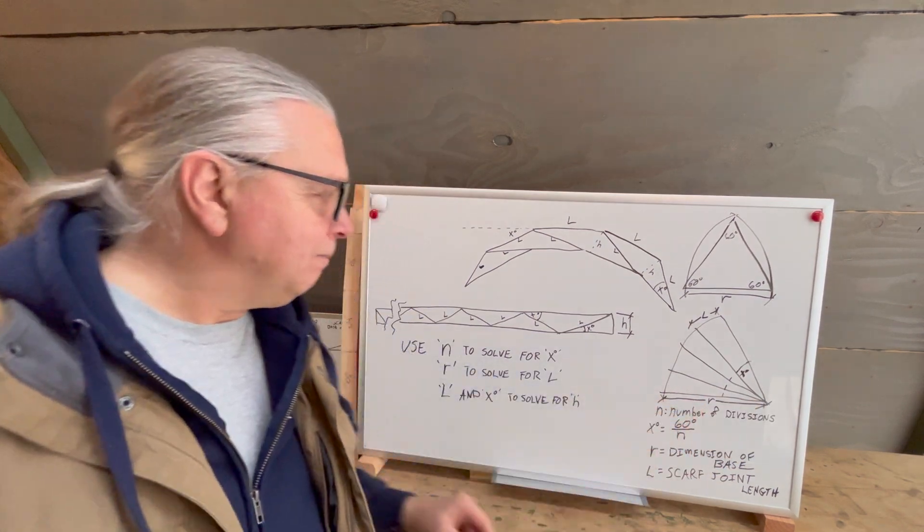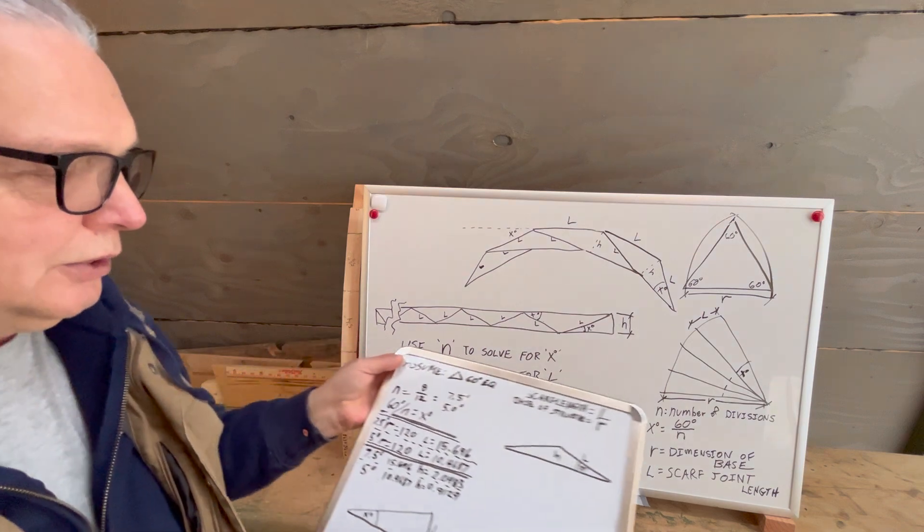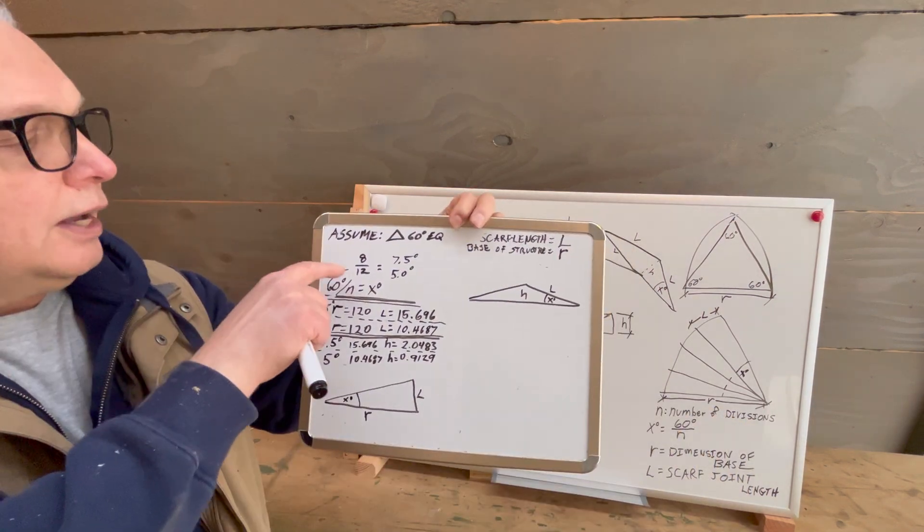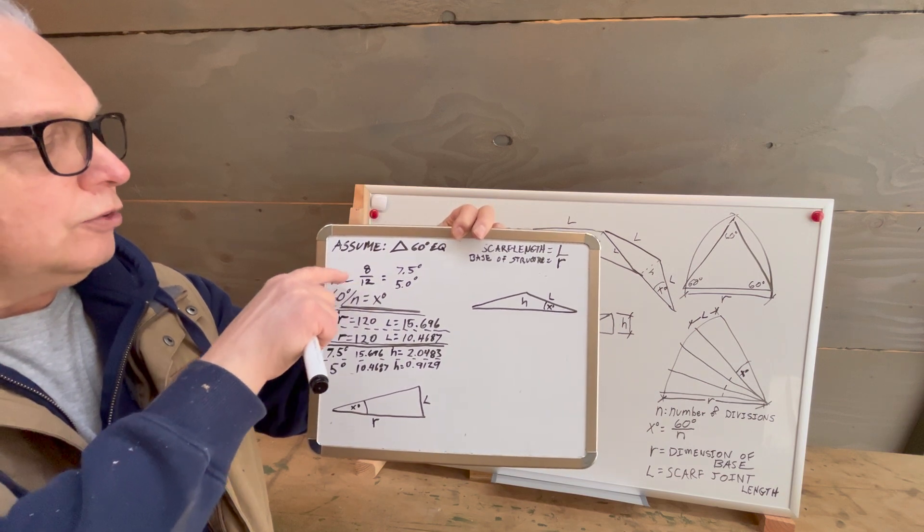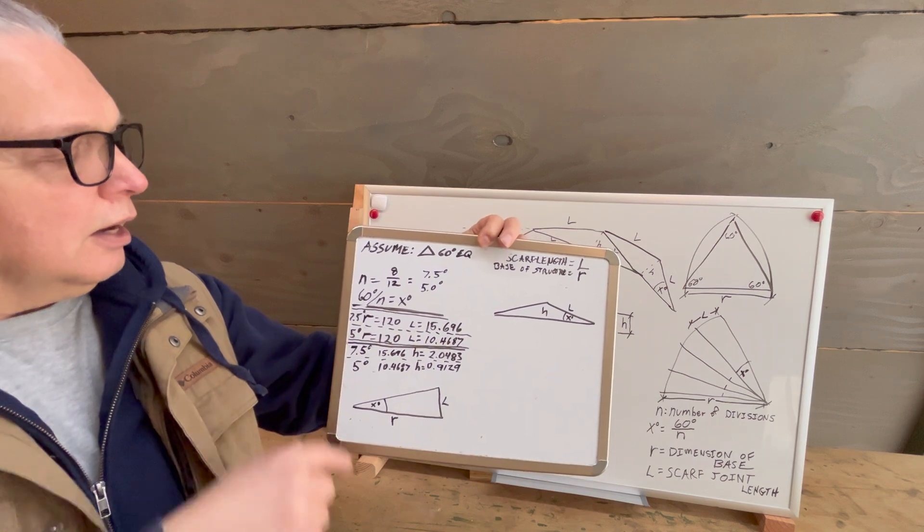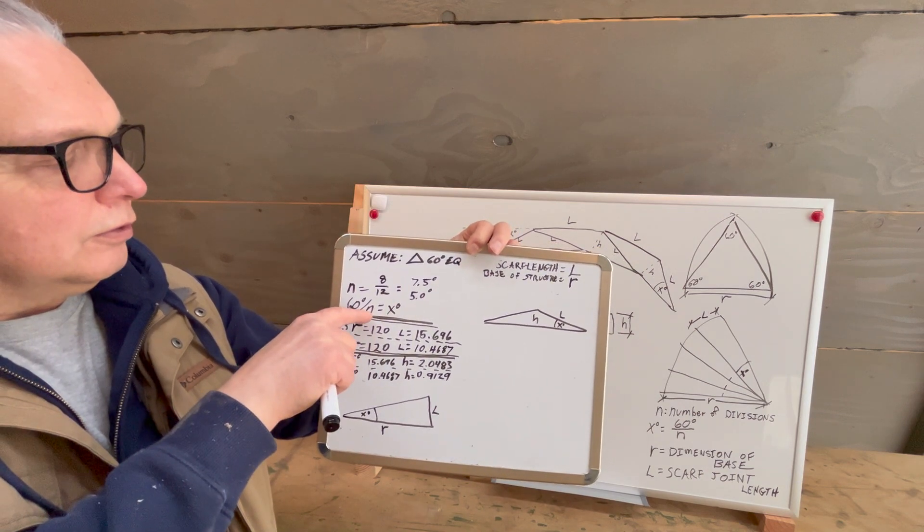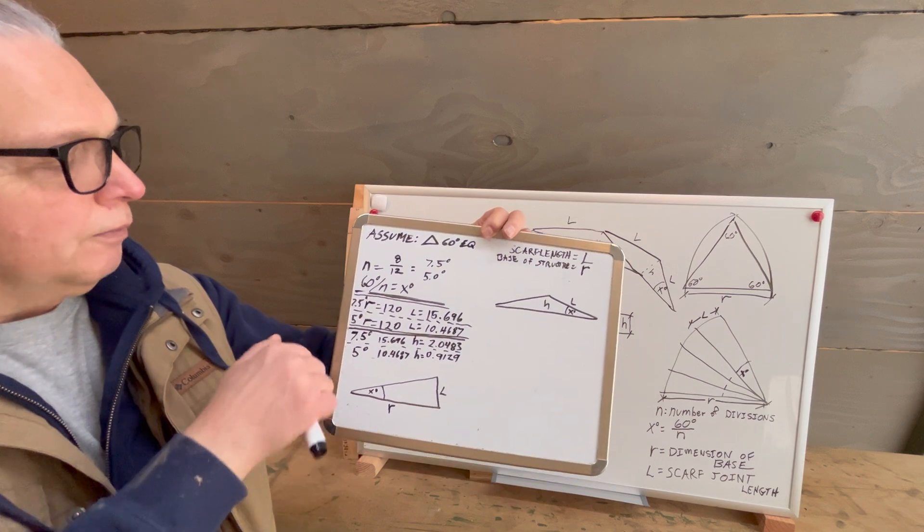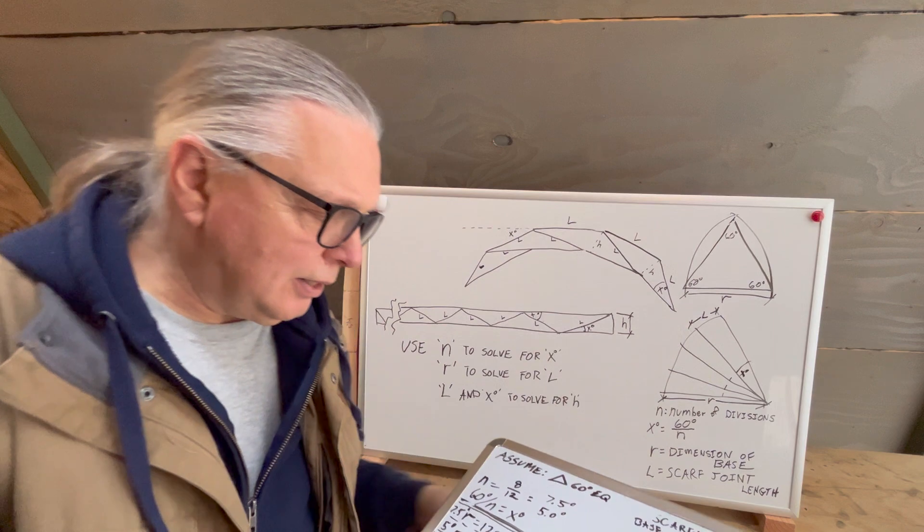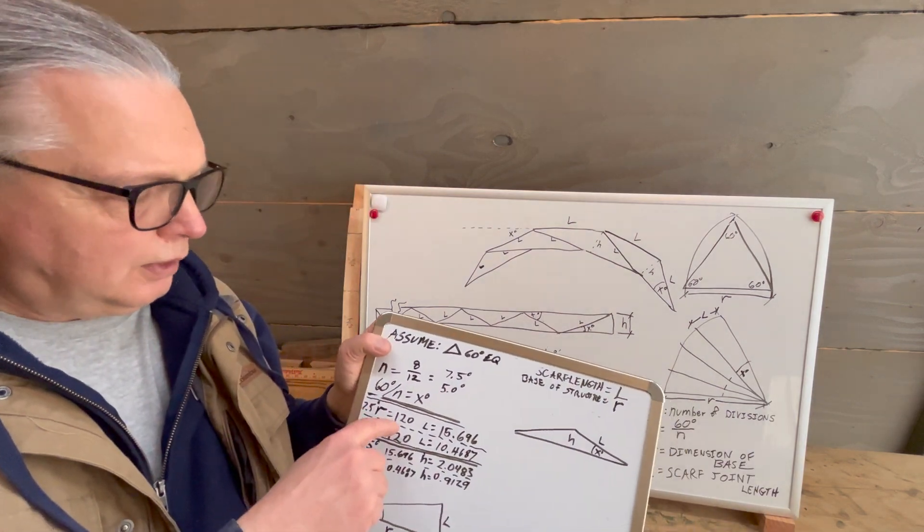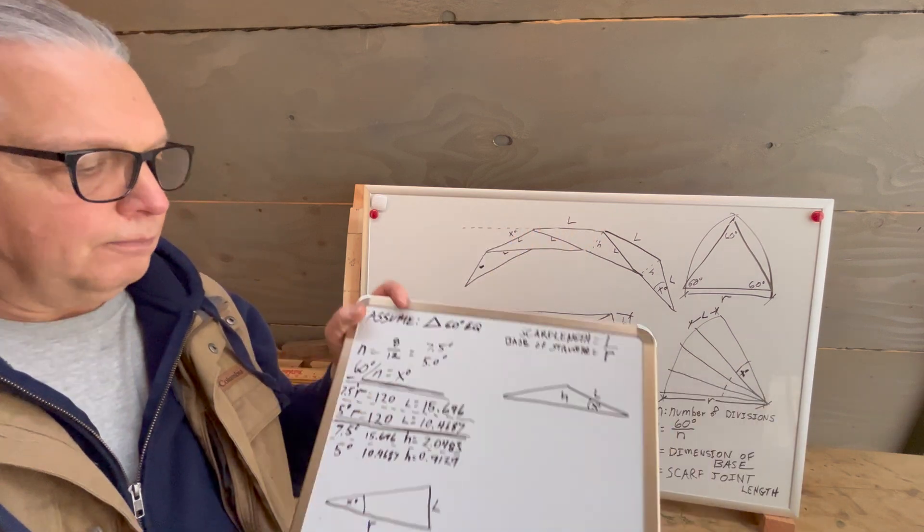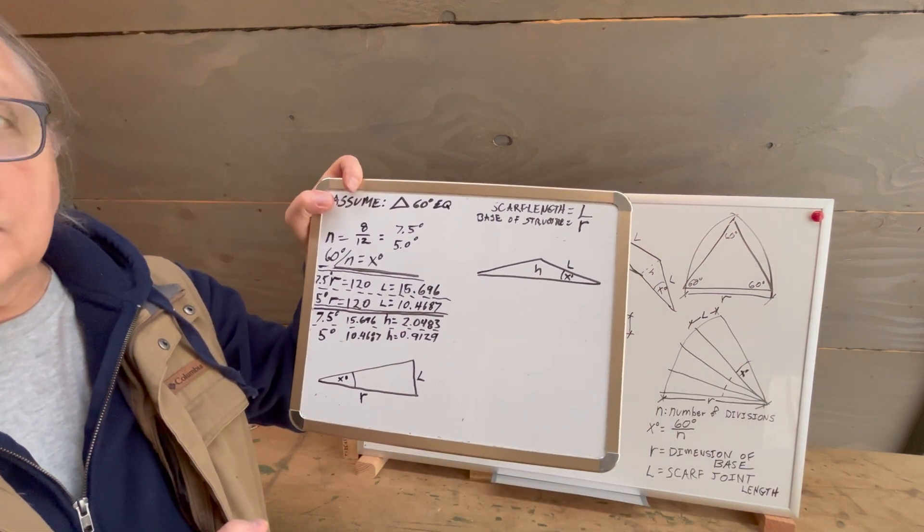10 feet, let's say. I've worked out a couple of examples of possibilities using my calculator. So n is either eight or 12. These are two different equations here, seven and a half or five degrees. The 60 degrees divided by n equals x degrees. So if you have a seven and a half degree angle and your radius is 120, then the length of this L length here is going to be 15.696.